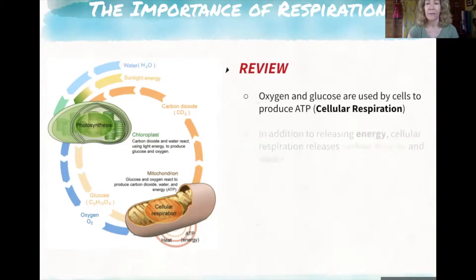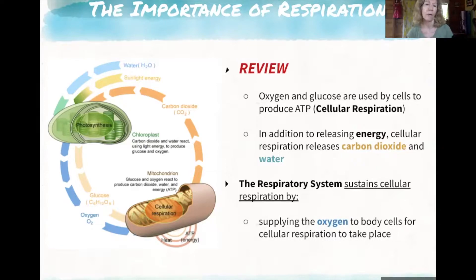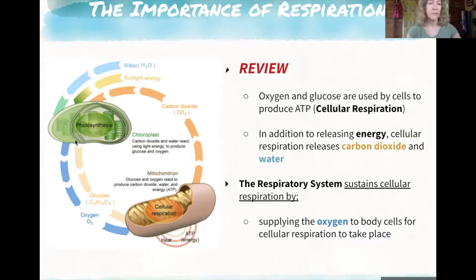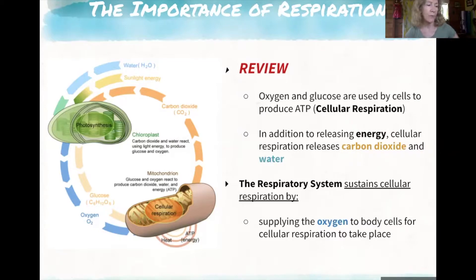Here's a review: oxygen and glucose are used by cells to produce ATP — that's cellular respiration. In addition to releasing energy, the waste product carbon dioxide and water are also produced. Photosynthesis is where the oxygen comes from in the first place, and then carbon dioxide released from cellular respiration becomes a reactant for photosynthesis. Whatever equation you wrote for number four, just reverse it for number six.